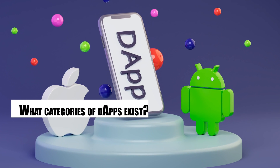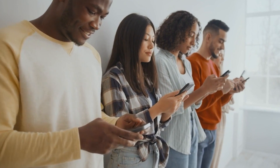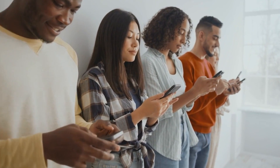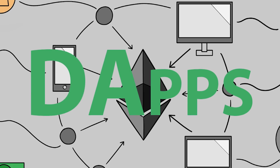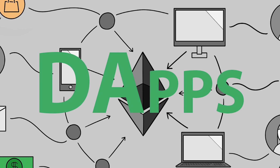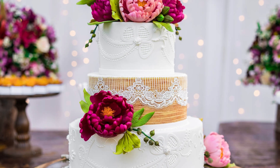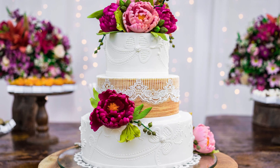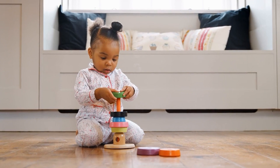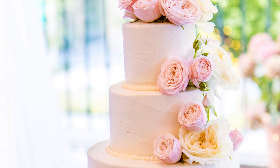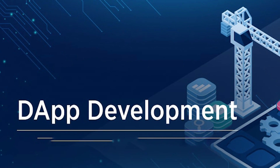What categories of dApps exist? Even though all dApps function in the same way, we can categorize them into three groups based on their unique uses and protocol layers. A protocol layer is similar to a layer of a wedding cake where several levels can be stacked on top of one another to provide the dApp an additional feature.